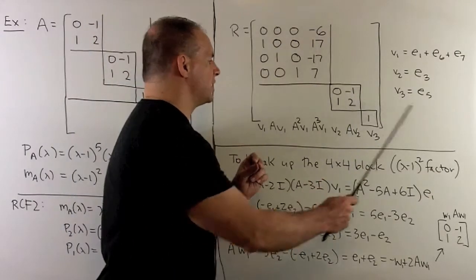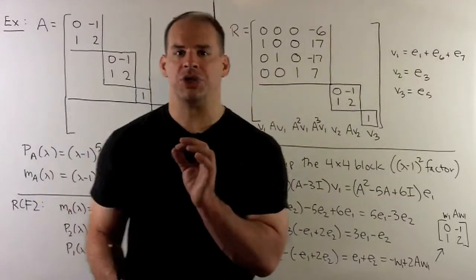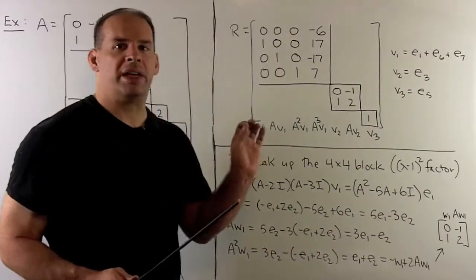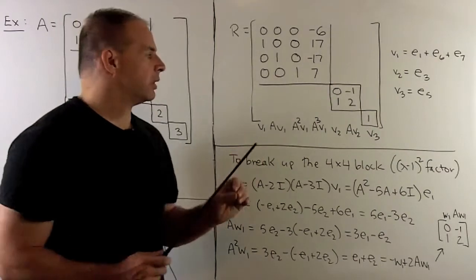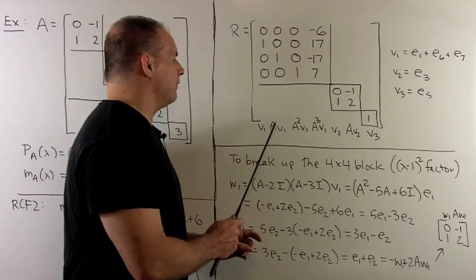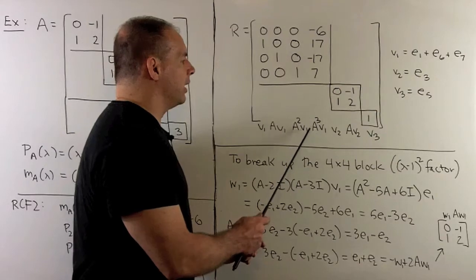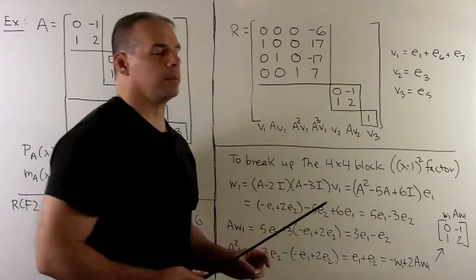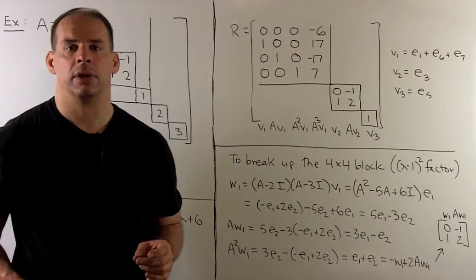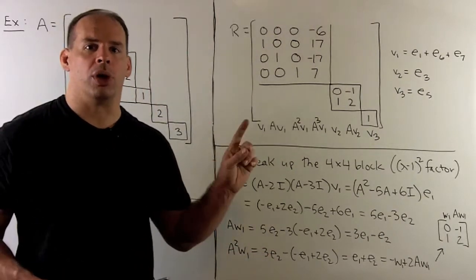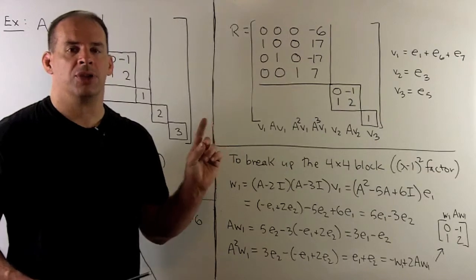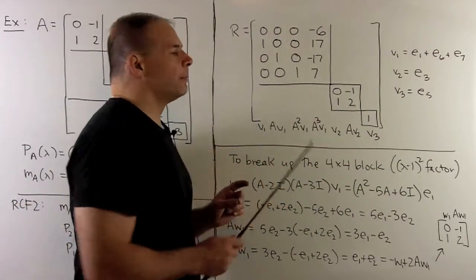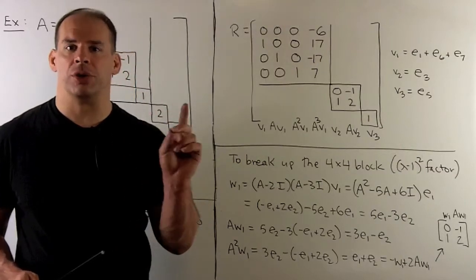So we have our three cyclic vectors when setting up rational canonical form in the second formulation. With these choices, we change basis from the standard basis to the new basis using the cyclic vectors: V_1, AV_1, A²V_1, A³V_1, then V_2, AV_2, and V_3. Now, if we want to go in the other direction, we want to break up our four by four block into the three blocks for each irreducible factor.